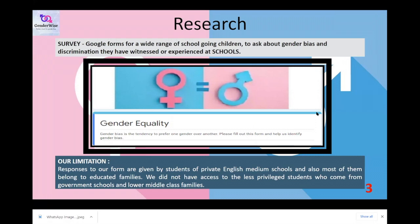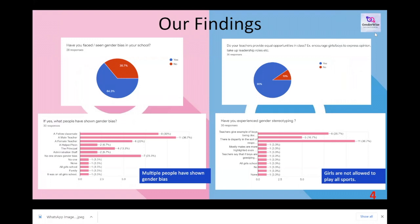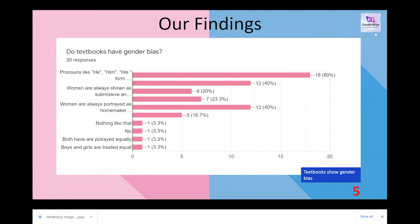We conducted a survey among a wide range of students. Our data is restricted to students of private English medium schools, since we did not have access to government schools — the program will also be implemented there. From the survey, it's clear that gender bias is prevalent in schools. The majority of the respondents reported that they have seen gender bias in school textbooks, whether it's the extensive usage of male pronouns or the roles given to males and females as examples.